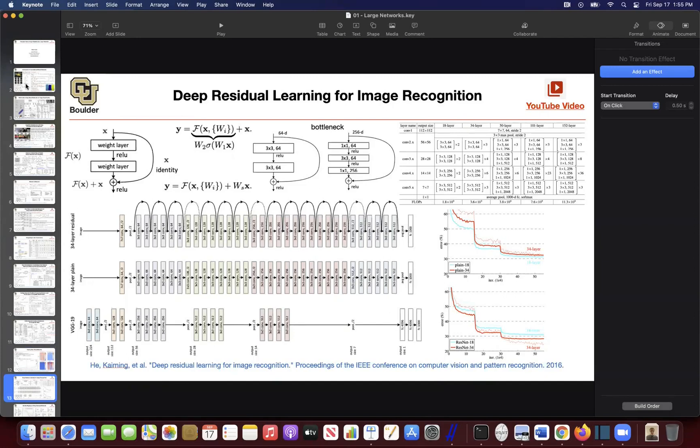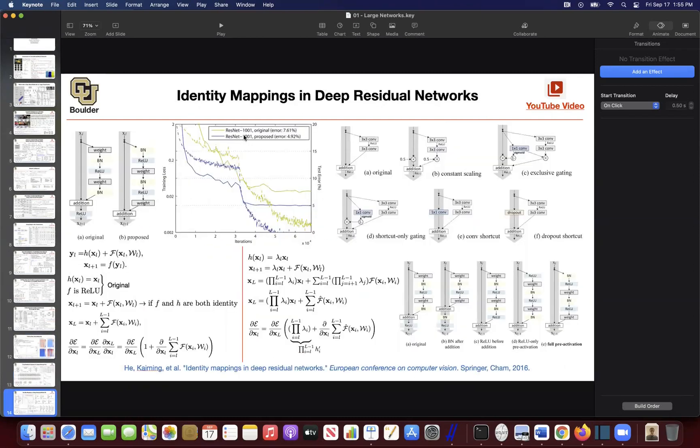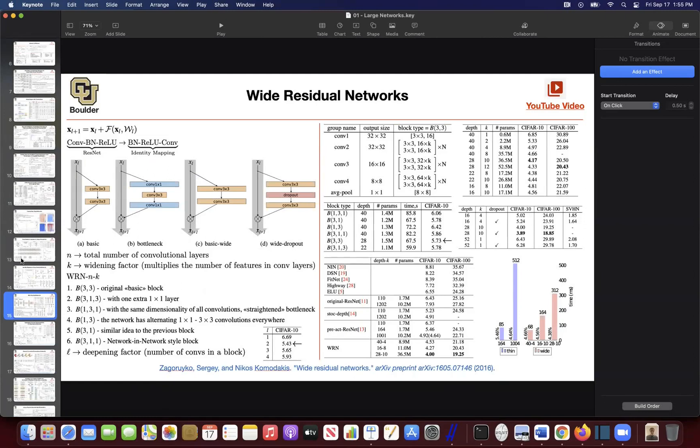Then we said you don't actually need the gating mechanism. You can do ResNet without any coefficients in front of your x, and it's actually better not to have any coefficients. That was the topic of this paper.